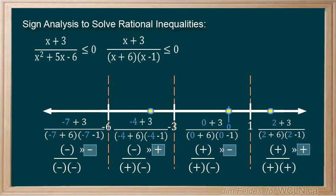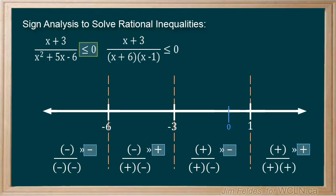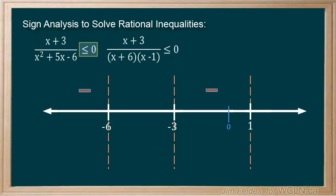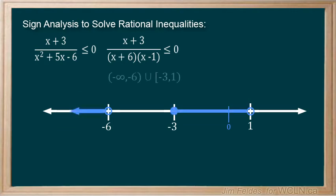The original statement is less than or equal to, so we would therefore be tempted to put solid circles in all of the roots that are included. Hopefully you recognize that by doing this, our two factors in the denominator would equal zero, which makes our statement undefined. So we must make sure not to include negative 6 and 1. As always, we can graph and show an interval notation.